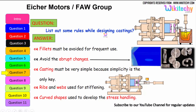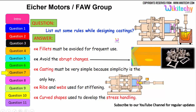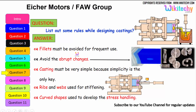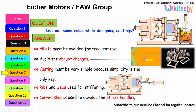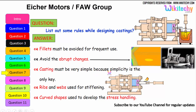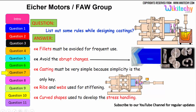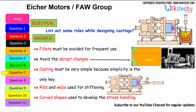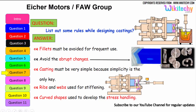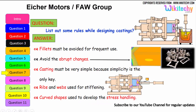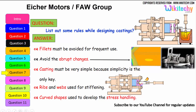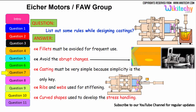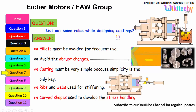Let us see some of the rules while designing castings. Fillets must be avoided for frequent use — that is the first one. Avoid abrupt changes. Casting must be very simple, because simplicity is the only key. Ribs and whips are used for stiffening — you should have the ribs. The curved shape should be used to develop stress handling. These are all some of the rules which we have to follow for castings.